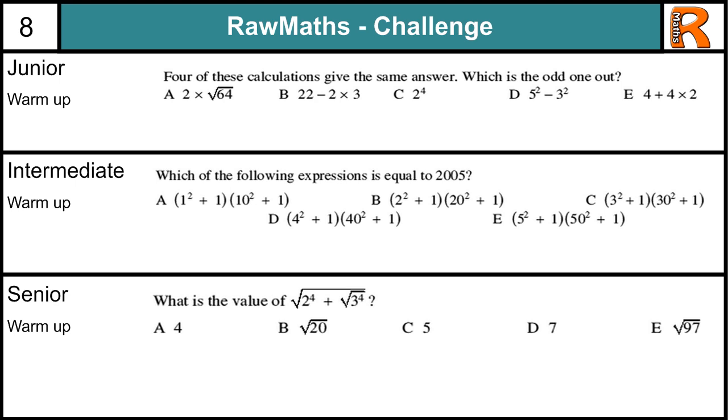Okay, let's get started with the junior warm-up. So which one is the odd one out? Let's just work them through. So 2 times the square root of 64, so that's 2 times 8 which is 16.